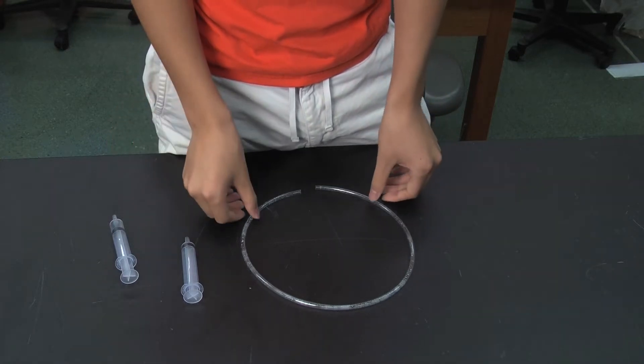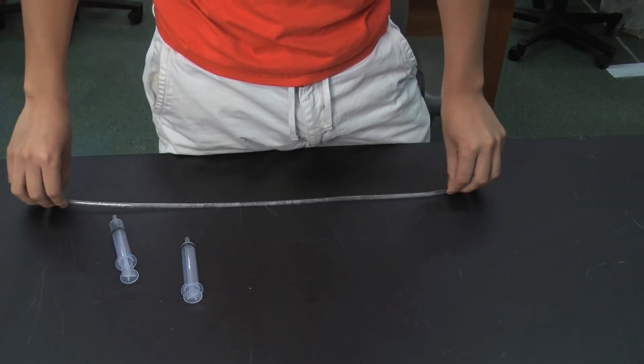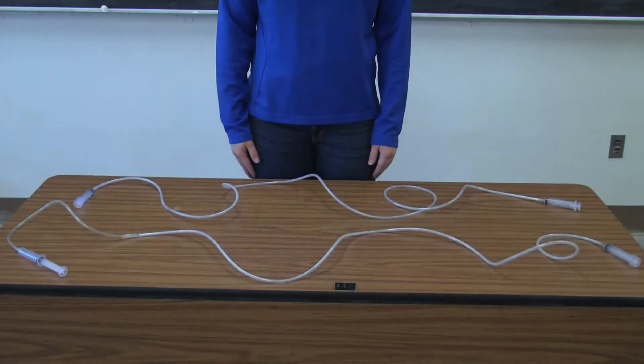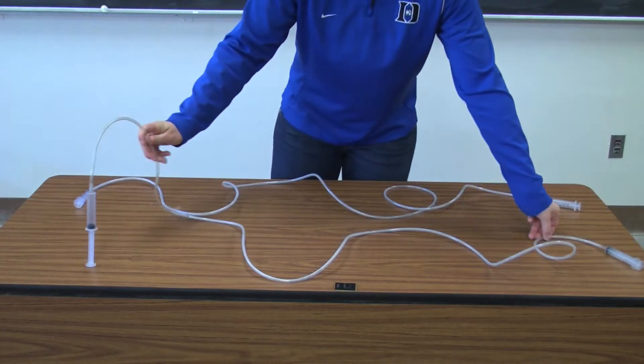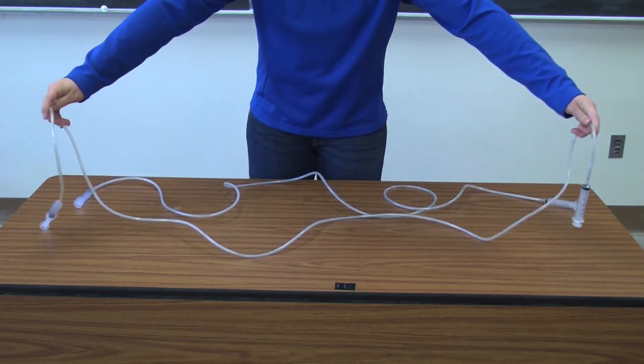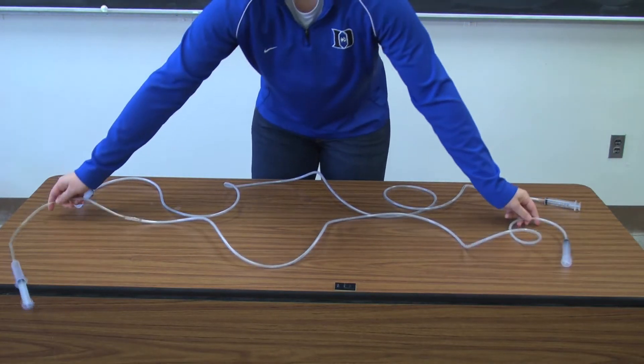Cut the tubing into 1.5-foot lengths to use for the activity. Also, you might want to use two longer lengths of tubing that are at least 8 feet long to make two systems. Fill one with water and one with air.